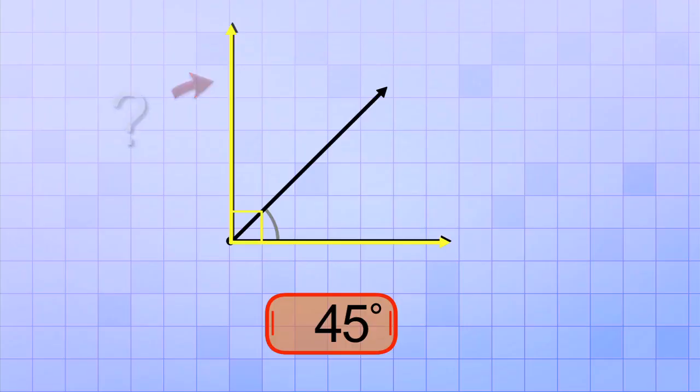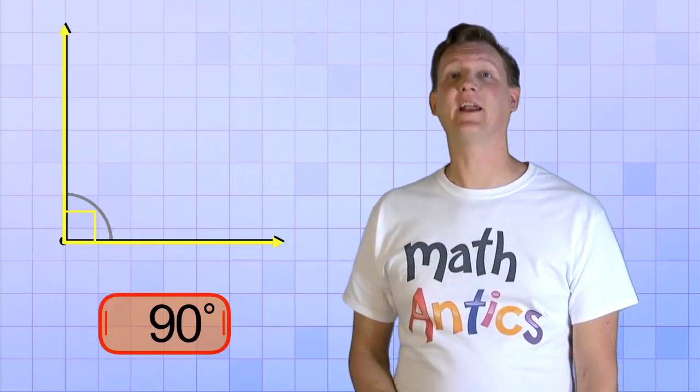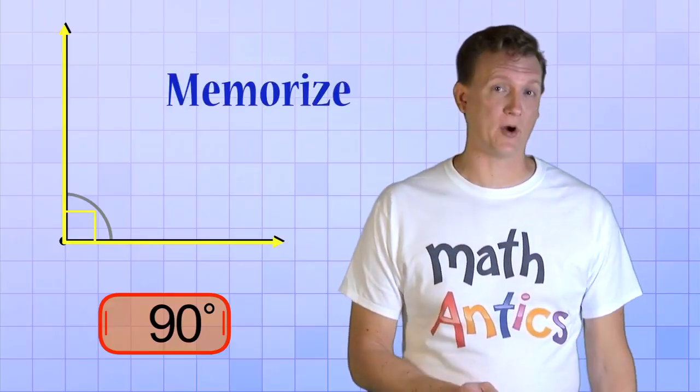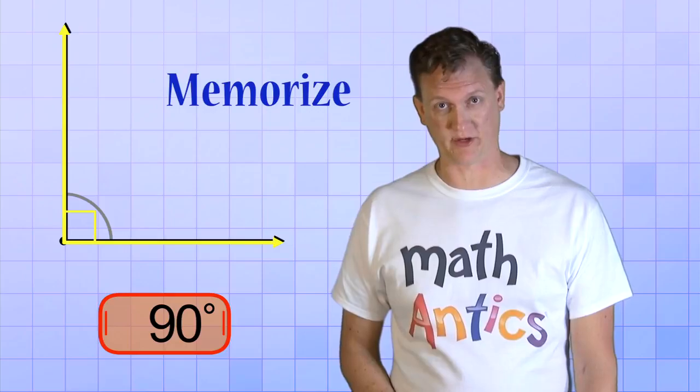Let's keep on rotating to see if you're right. 50, 60, 70, 80, and 90. Yup, a right angle is exactly 90 degrees. And that is super important to memorize because right angles are used all the time in geometry.